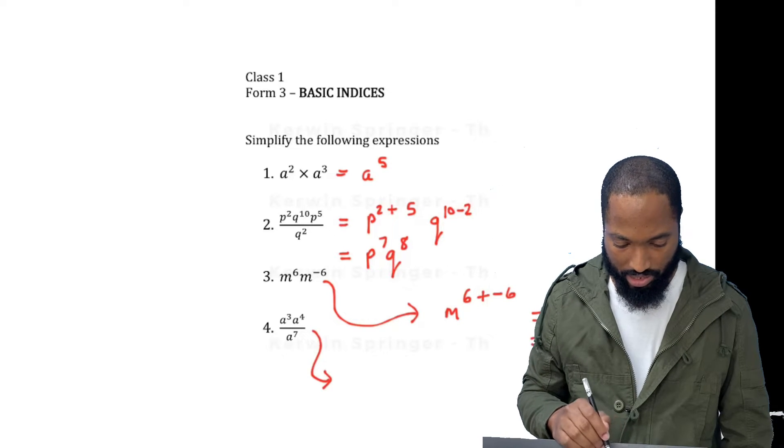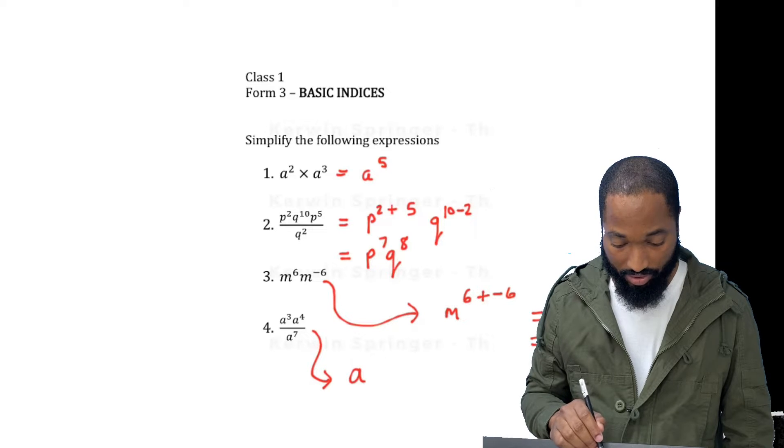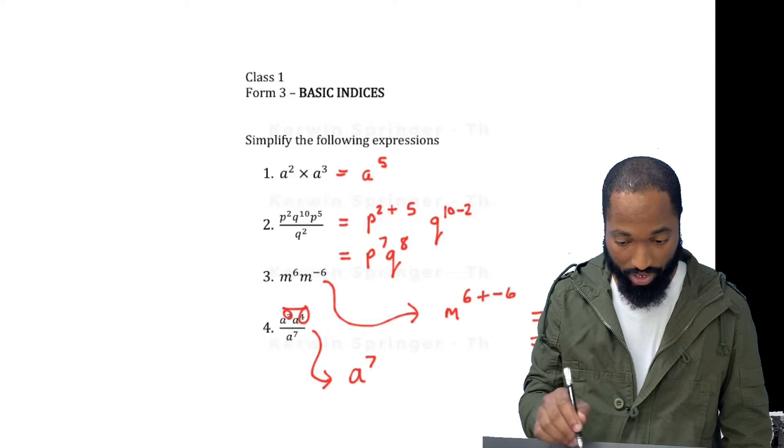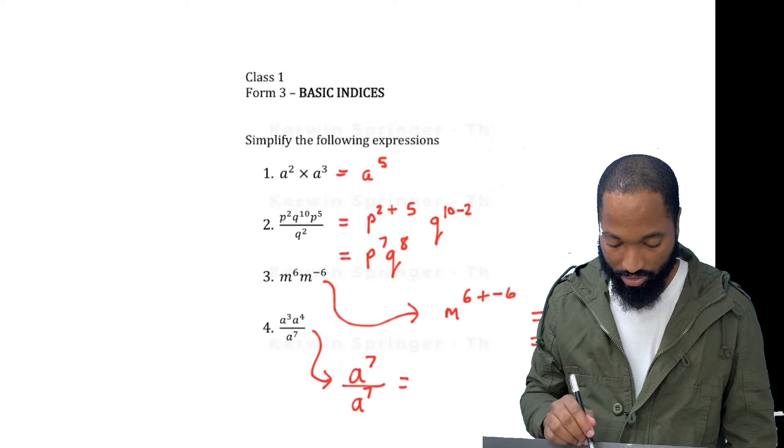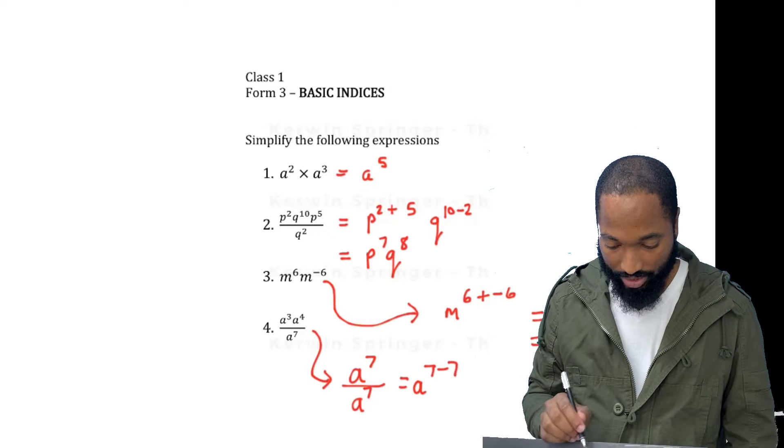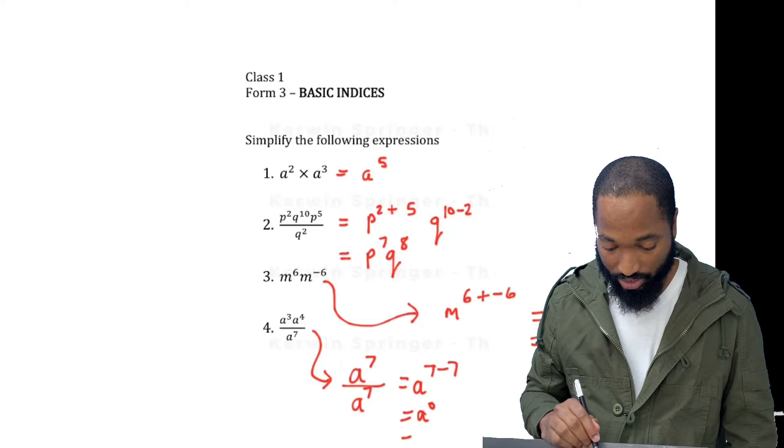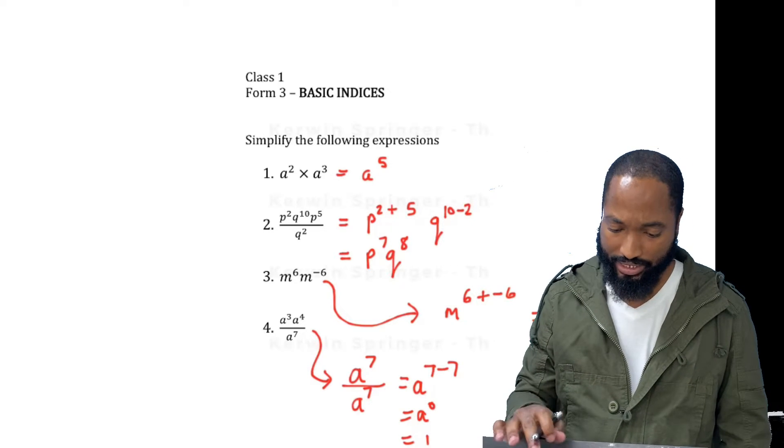So this last one looks like we have 8 to the power of 7. You're all seeing the 3 plus 4 giving us 7, right? And 8 to the power of 7. And this would be 8 to the power of 7 take away 7, which is 8 to the power of 0, which is 1. Kind of squeezed up, but we get the answers.